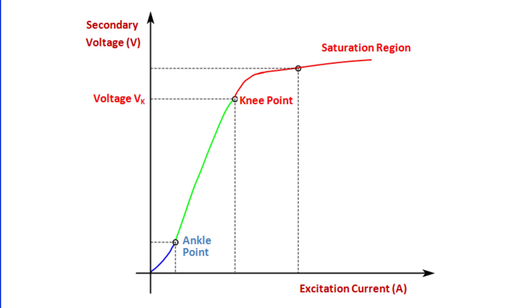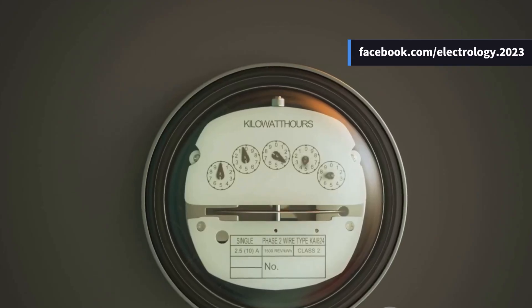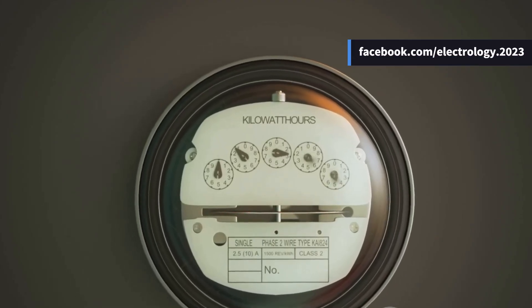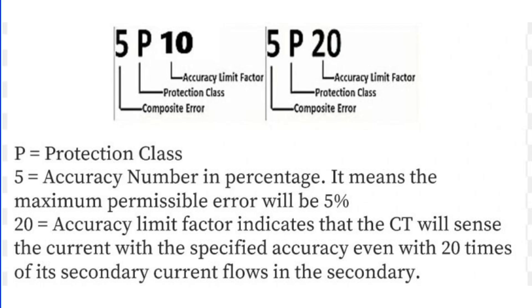But here's the issue: if a protection CT is used for metering, the accuracy under normal conditions won't meet the revenue grade standards. During a fault, the secondary current can reach 10 to 20 times the rated value, damaging the meter since meters aren't designed to handle such high currents.